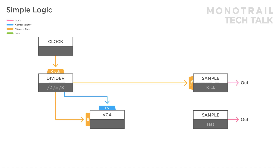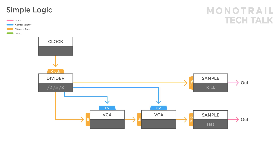You can easily create AND logic for more than two inputs by chaining VCAs. In this setup the output of the first VCA will only pass on to the hit if the second VCA has a high gate modulating the CV input. So, this setup only produces a gate signal if the input of the first VCA and both modulation inputs are high.